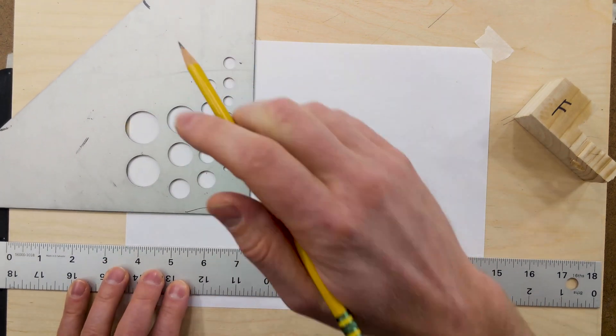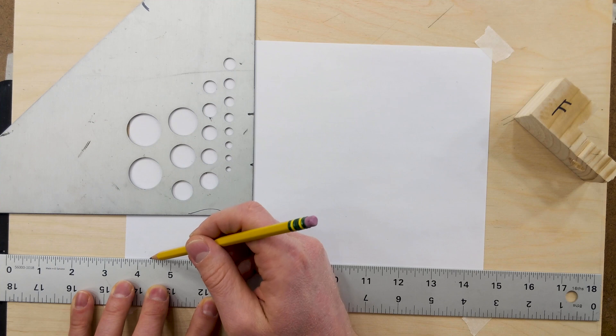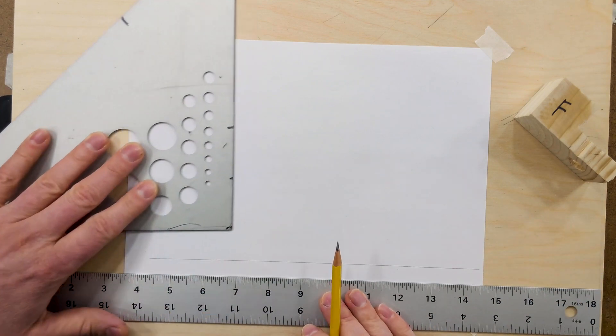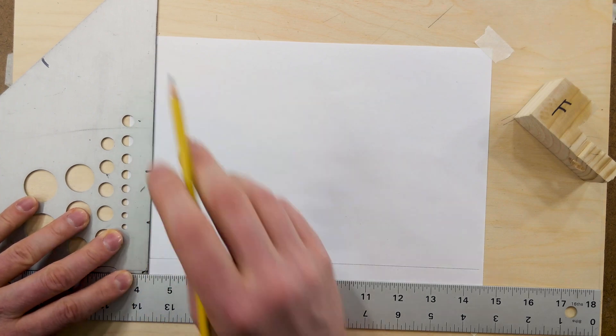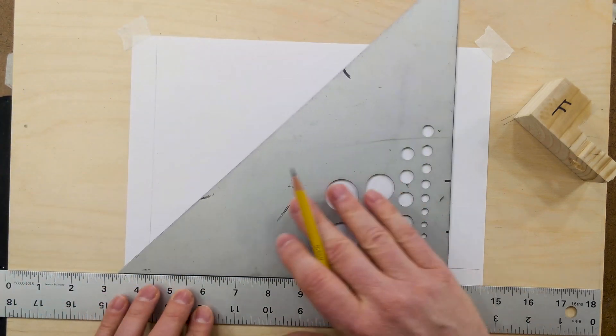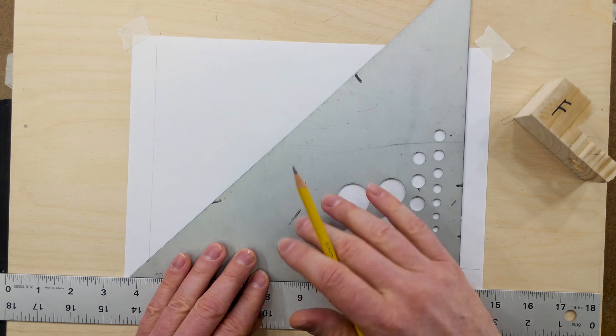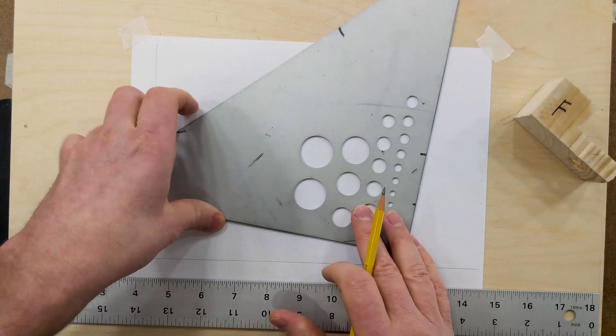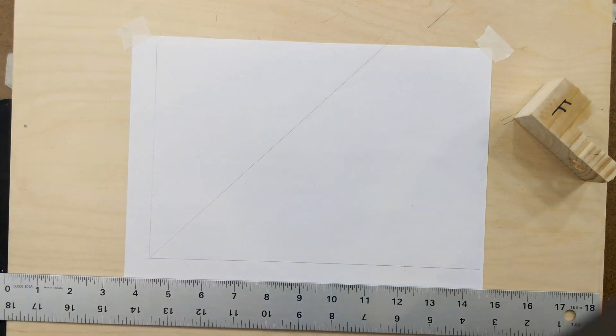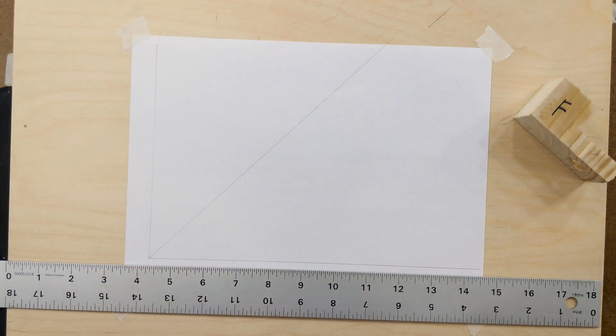The first thing to do is down towards the bottom of the page, let's draw a light horizontal line. Then at the intersection of this line, we'll draw a vertical line. And then at the intersection, we'll draw a 45-degree line. I'm drawing these a little darker so you can see, but you can make these very light on your page.